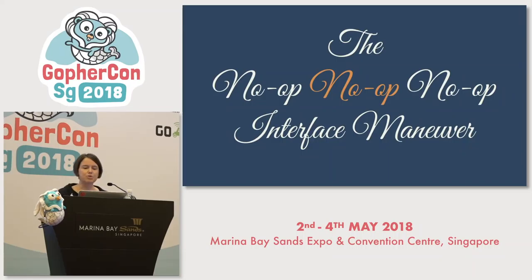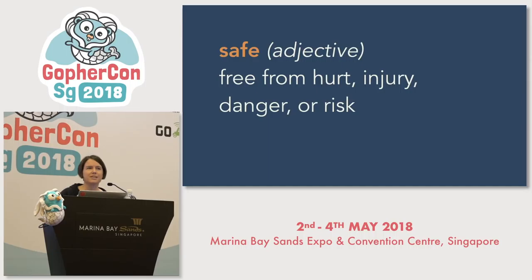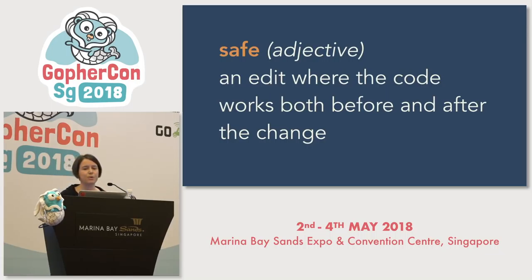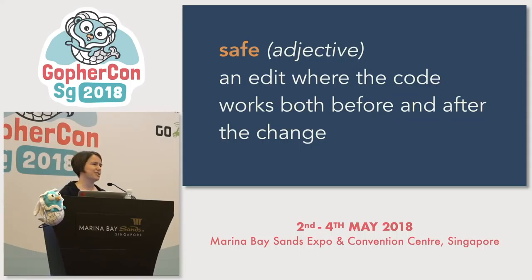So what the no-op, no-op, no-op interface maneuver lets us do is move things around in tiny increments until we can tell the notification functions who to talk to for all their communication needs. In production we'll use a real transmitter, and in test we can pass in fake transmitters that just keep track of what happens and don't talk to pub-sub services or write to the database or do anything asynchronously that we'd have to jump through hoops to test. Almost every single step in this maneuver is safe. A safe step is one change where the code will work both before and after the edit.